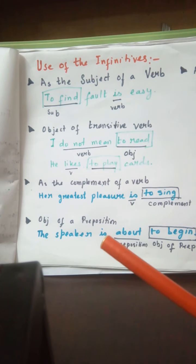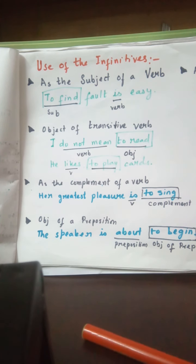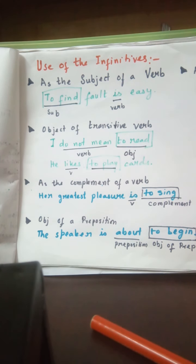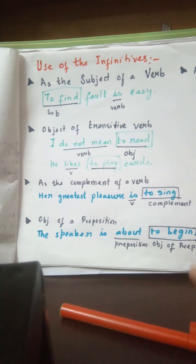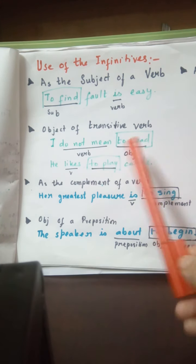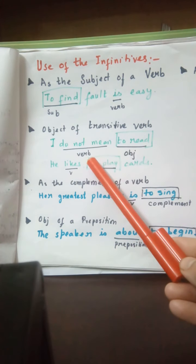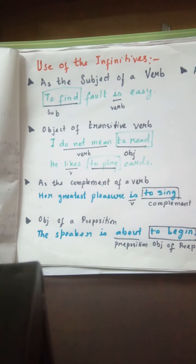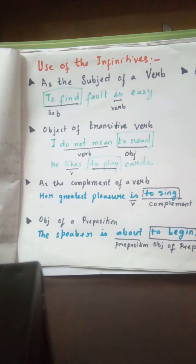The next usage of infinitives is as the object of a transitive verb. A transitive verb is a verb whose action directly affects an object. The object of a transitive verb can be an infinitive. For example, 'I do not mean to read' — 'to read' is the object of 'mean.' Similarly, 'he likes to play cards' — 'likes' is the main verb and 'to play' is the object. 'To play' is functioning as a noun and is an infinitive.